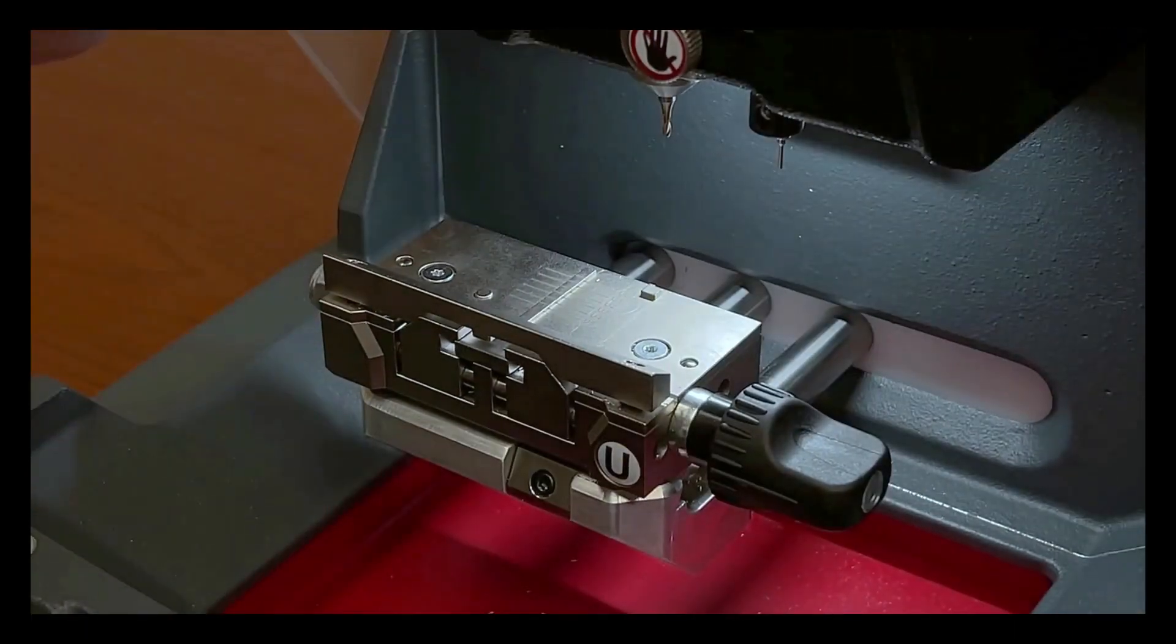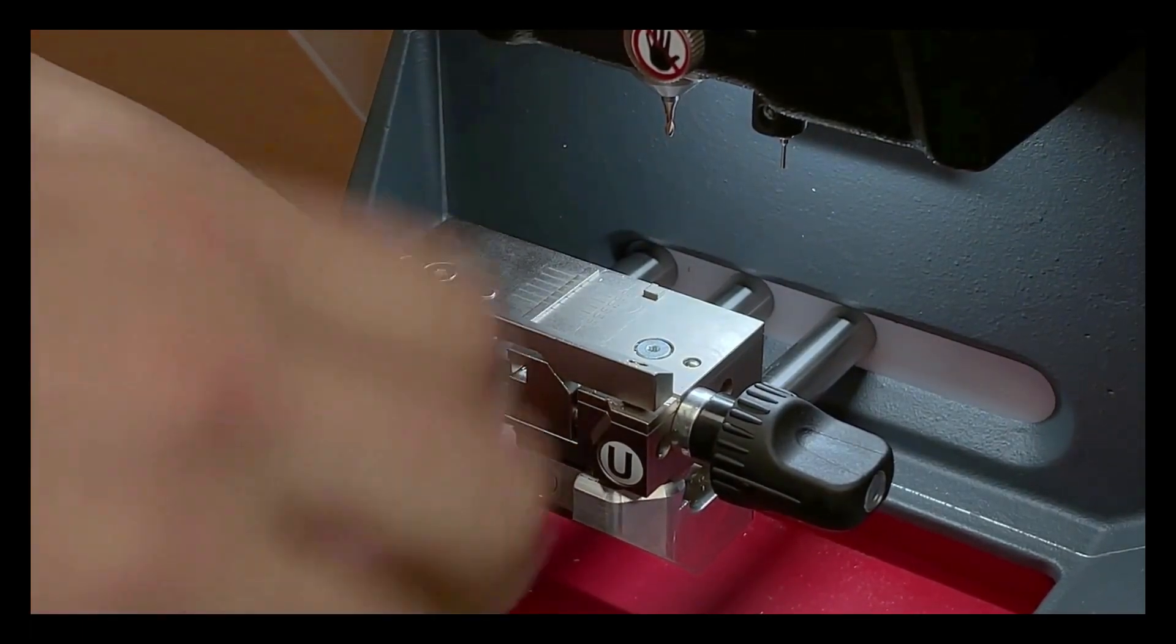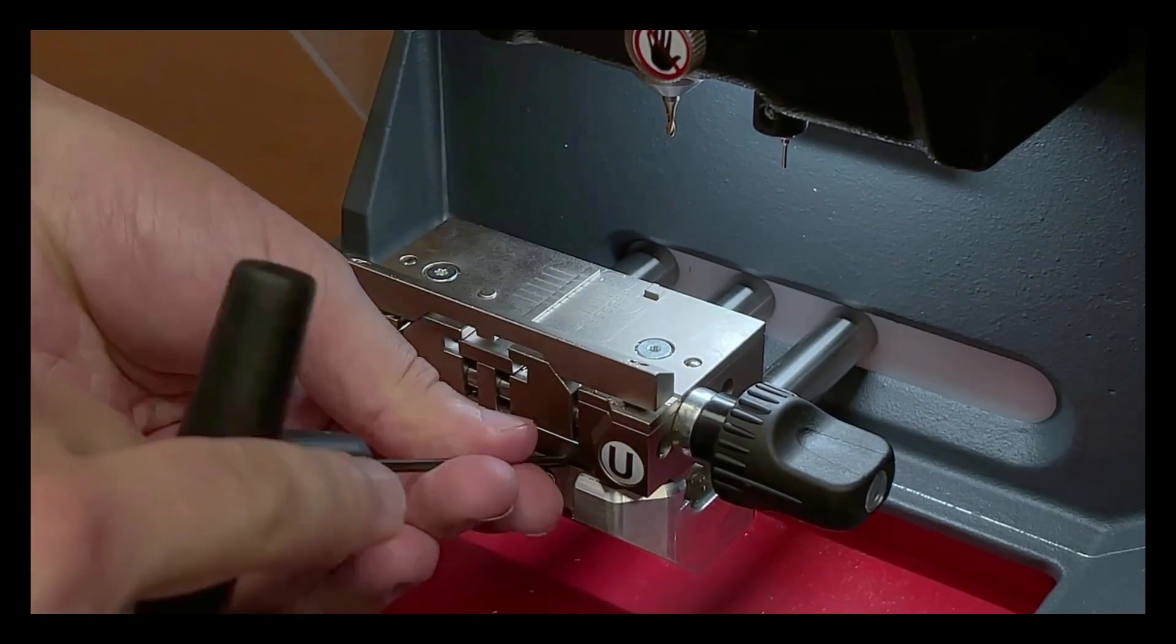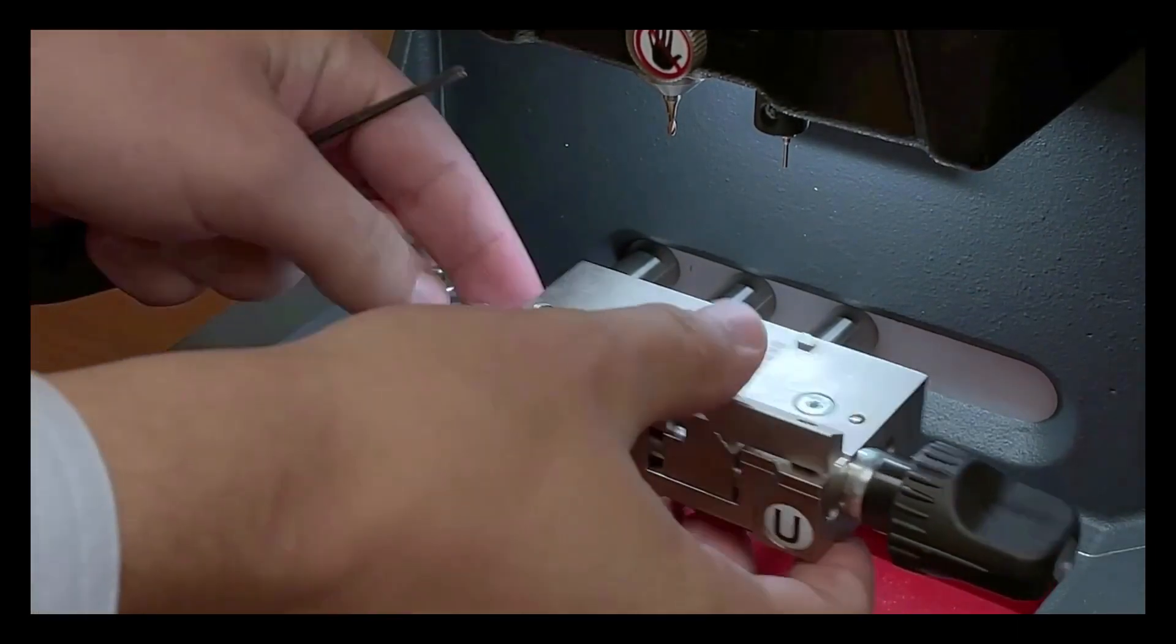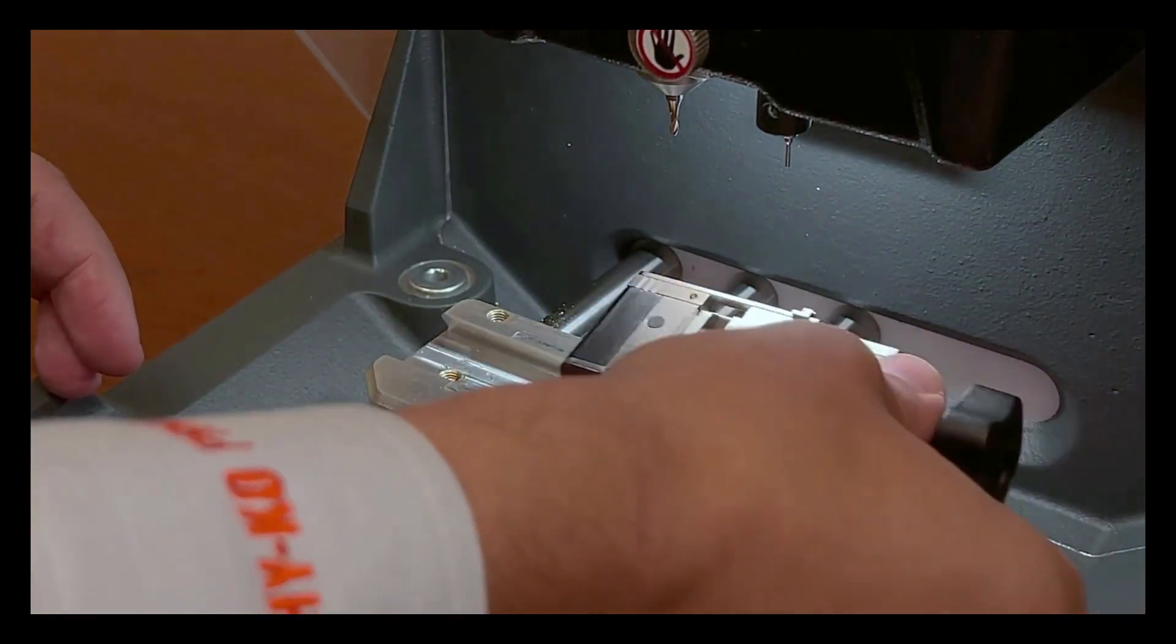To change the V-Jaw, simply lift the shield and undo the screw. Slide out the U-Jaw, then slide in the V-Jaw.